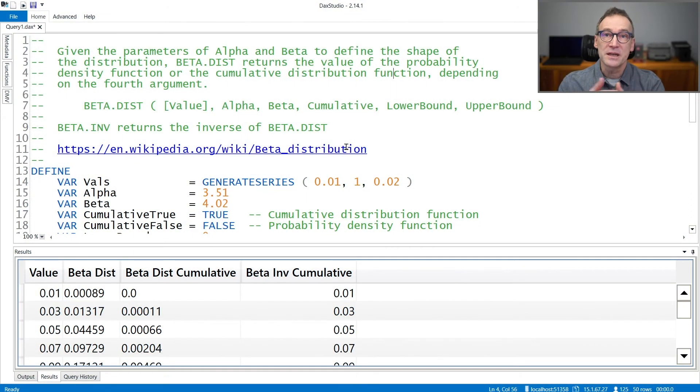BetaDist is a statistical function that implements the beta distribution. You need to call BetaDist providing the value and then the two arguments alpha and beta that define the shape of the statistical function.